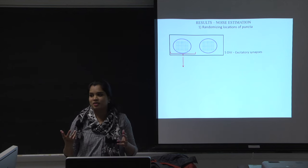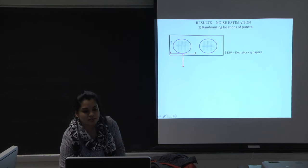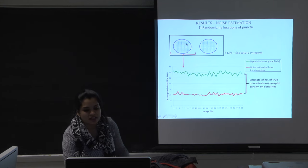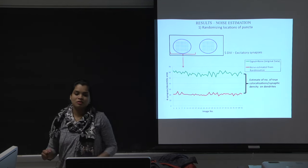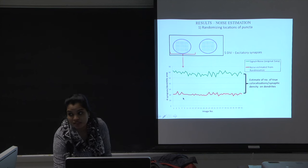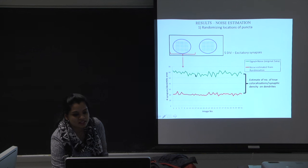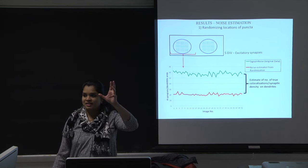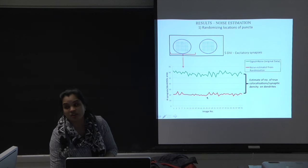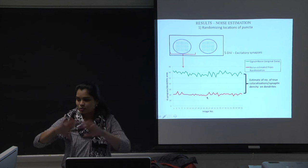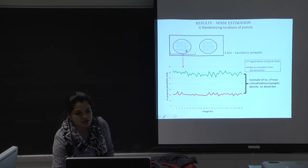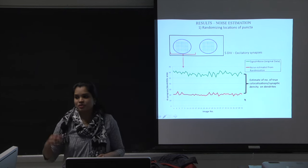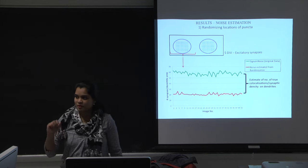Now showing the results in numbers: this cartoon shows the microscope slide with two cover slips. The first cover slip had 81 images, of which 51 were good quality. The green signal shows the synaptic density calculated from step one — signal plus noise. The red signal represents the noise estimate from moving the masks around. Almost all images on this cover slip have pretty much the same noise level, and the difference between these two values gives the estimate of potentially real synapses.